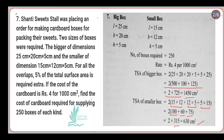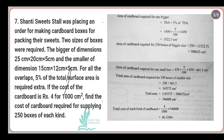We have found the total surface area as the first step. Now let's move to the next step. Whenever you get a new question, don't panic — look for the points you can solve. The question says five percent of the total surface area is required extra for overlaps.